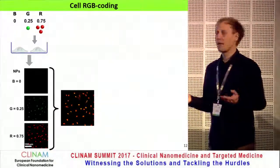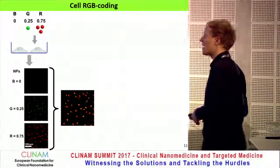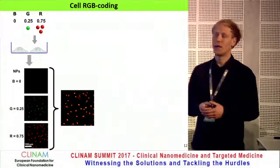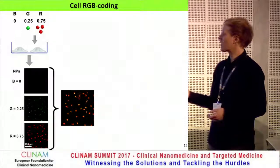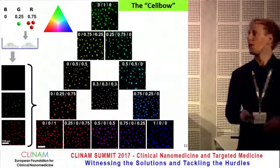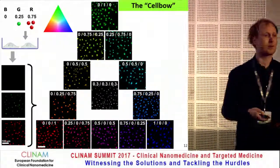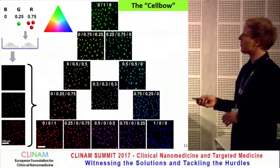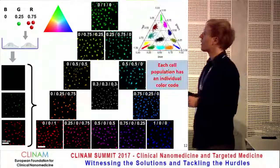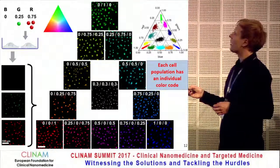For color coding, we incubate cells with mixtures of nanoparticle solutions. For example, with no blue, 25% green, and 75% red particles, we get no signal in blue, a relatively homogeneous signal in green, and about three times higher signal in the red channel. Combining these images gives relatively uniformly and homogeneously orange-labeled cells. By using different proportions corresponding to different positions within the RGB color triangle, we achieve what we call our 'cell bow' — a set of relatively nicely distinguishable colors. We can automatically analyze these images, and plotting results in a triangular fashion, we see cell populations with individual and quite well-distinguishable color codes.